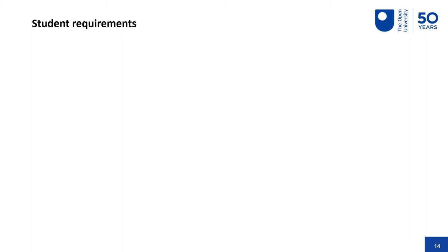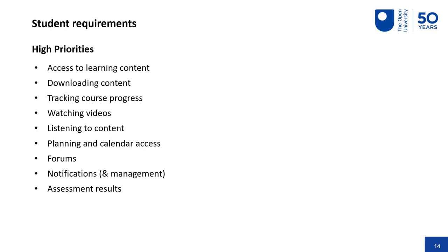So what do they actually want? From all of that, these are the high priorities students told us they wanted. Unsurprisingly, access to their learning content — being able to read stuff on the go, watch videos, do quizzes, connect with activities. But a new one for us, because it's being delivered through a mobile device, is that they wanted to be able to listen to the content — having words spoken to them, whether they're in their car or commuting. That doesn't exist in the app at the moment, but it's something we'll probably look at in the future.